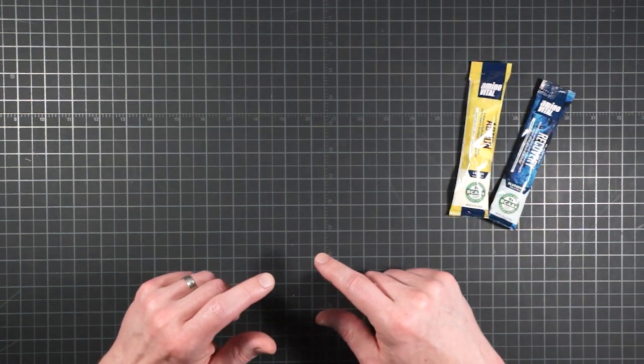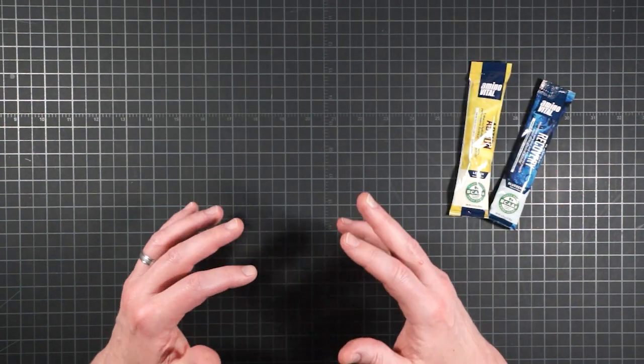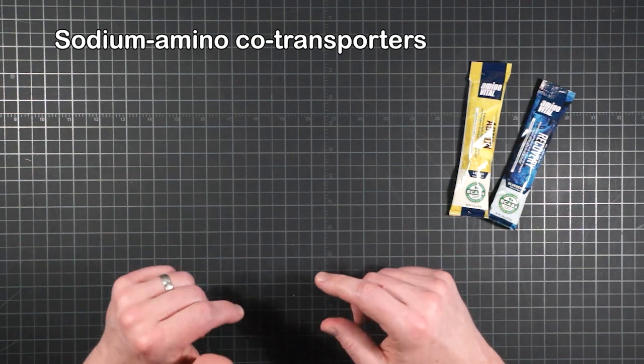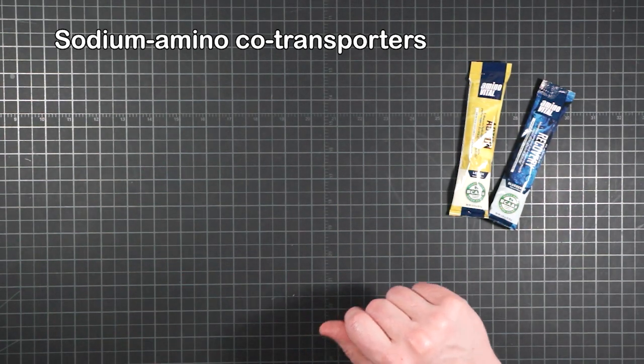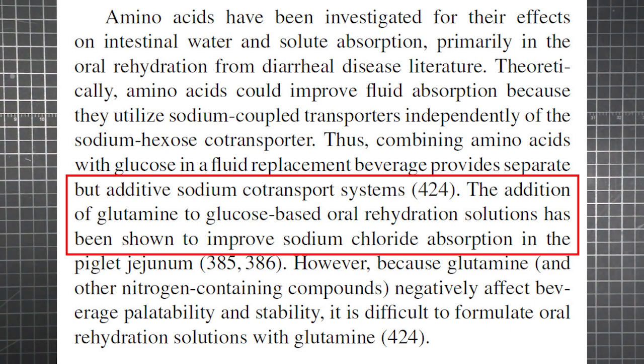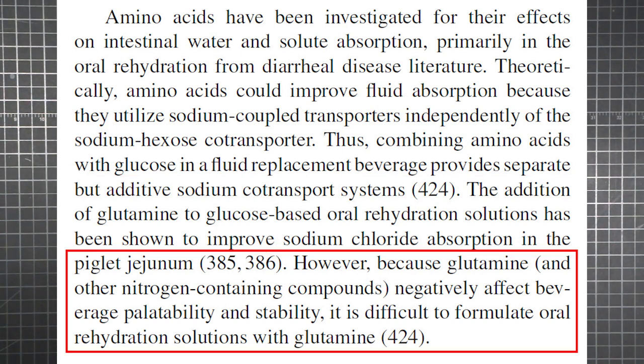But more generally, amino acids can actually aid rehydration in a similar way that sugars do through the use of sodium-coupled co-transporters. Specifically, the addition of glutamine to glucose-based oral rehydration solutions has been shown to improve sodium chloride absorption in pig intestines. They say that glutamine can negatively affect beverage palatability and stability, but I found several products for the chart that do contain it.